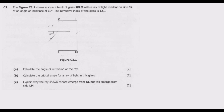Welcome viewers to another episode on ASUG 12 exams. In this episode we continue looking at the 2021 GCE science paper 1. Let us look at question C2. The figure C2.1 shows a square block of glass JKLM with a ray of light incident on side JK at an angle of incidence of 60 degrees.